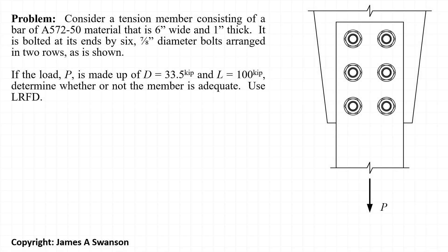In this example, we'll evaluate a tension member that is made up of a 6 inch wide by 1 inch thick bar made out of A572 grade 50 steel. The bar is connected to a gusset plate by 6 seven-eighths inch diameter bolts arranged in 2 rows as is shown.